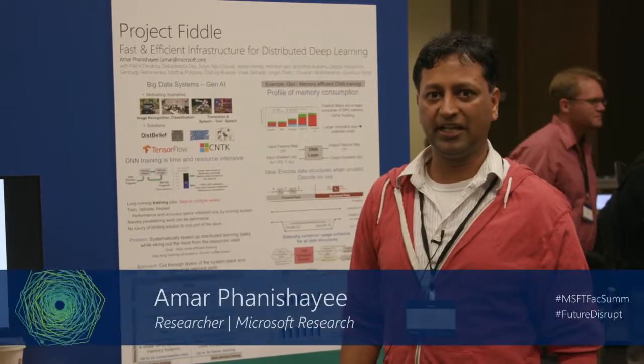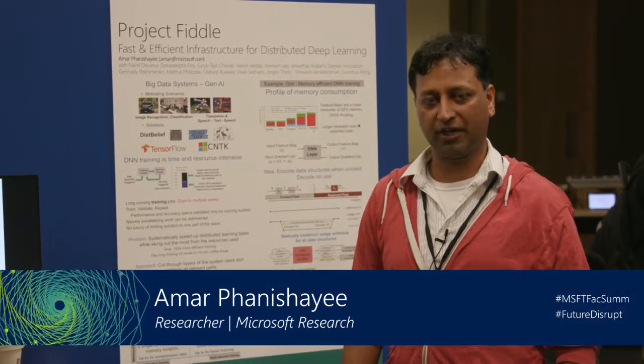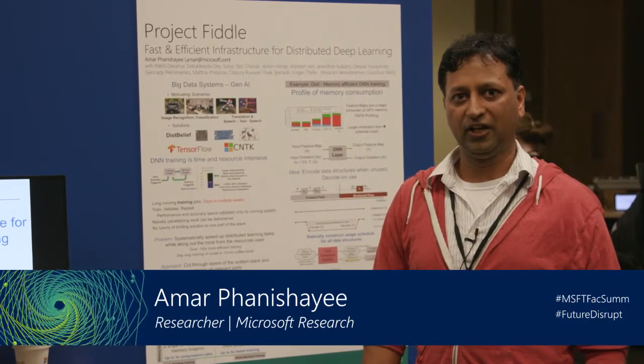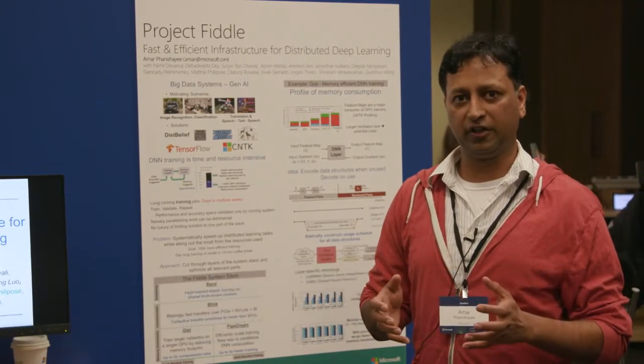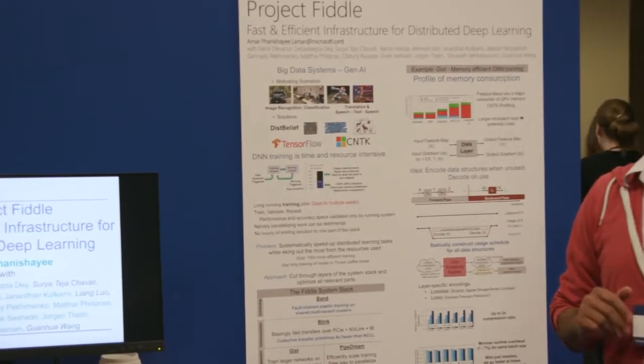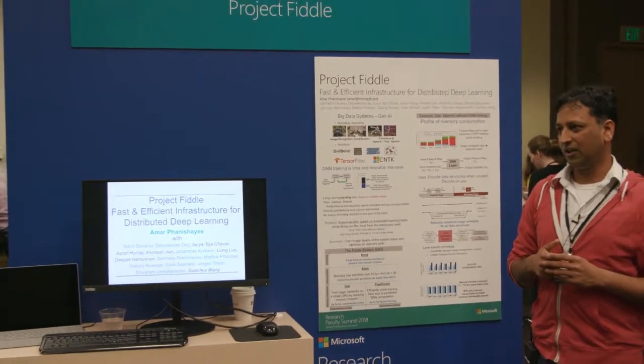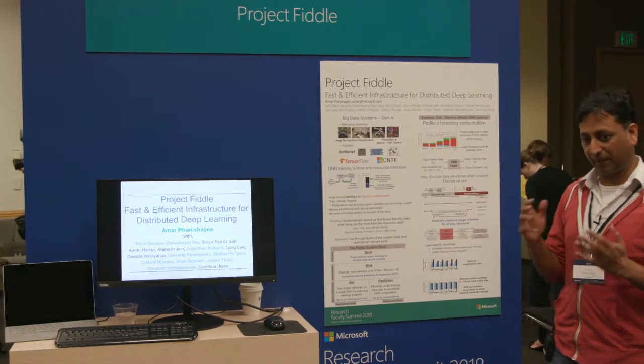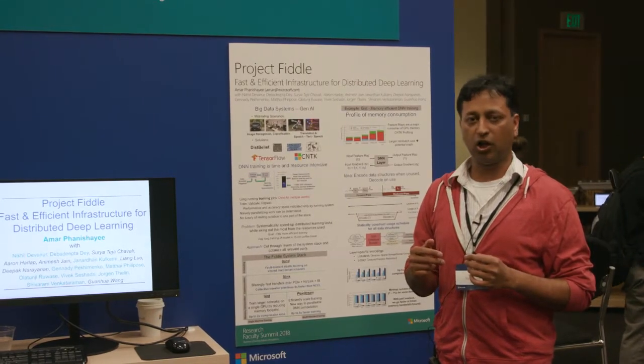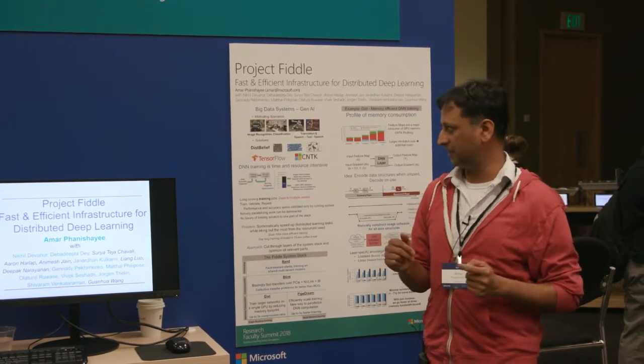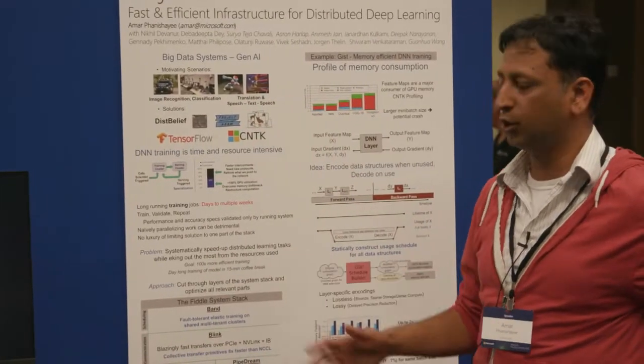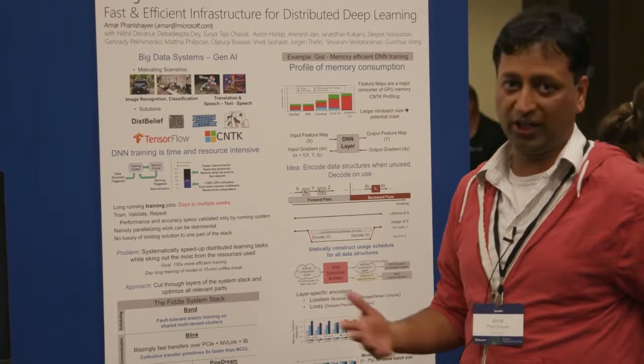My name is Amar and I lead Project Fiddle here at Microsoft Research. My colleagues and I are working on speeding up distributed machine learning jobs. Our emphasis has been on distributed deep learning. DNN models are expensive to train, not just in the amount of resources they consume, but also in the amount of time they take to train. The motivation for these systems is this new generation of big data systems in this generation of AI.